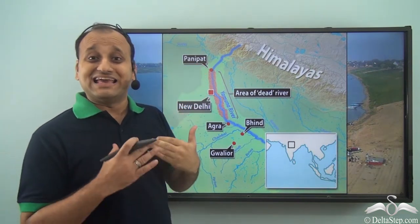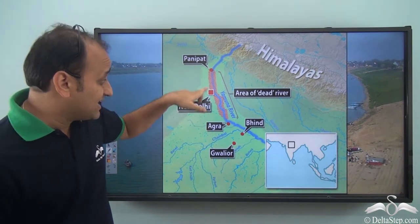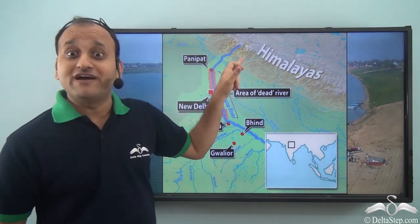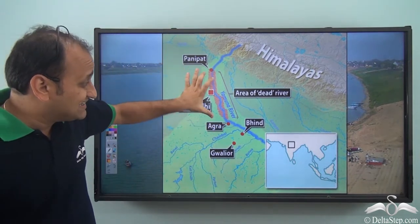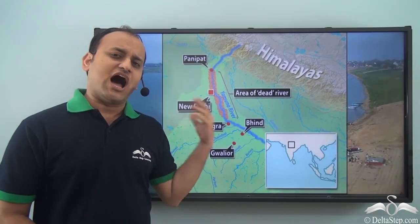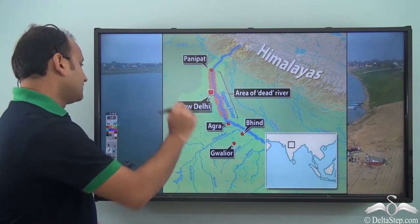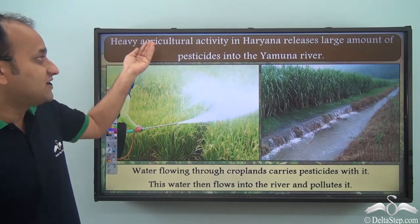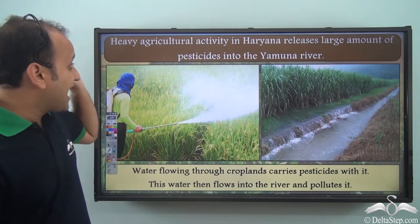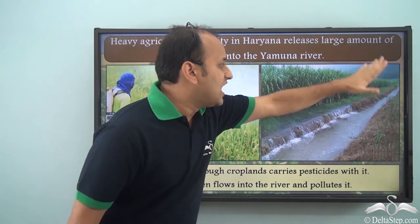Can you see this stretch from Panipat to Agra? This entire stretch is highly polluted, which is why this area is called the 'area of dead river.' So you can imagine how severely polluted this stretch of the Yamuna River is. The first reason for such high levels of water pollution in this region is heavy agricultural activity. Heavy agricultural activity in Haryana releases large amounts of pesticides into the Yamuna River.